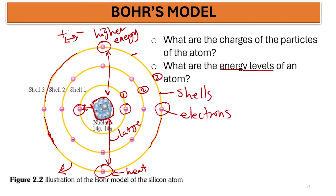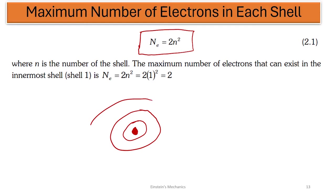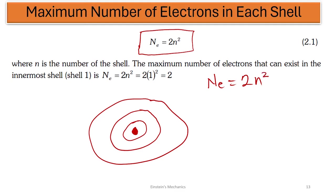Now let's look at the maximum number of electrons in each shell. This is a formula that relates to the number of electrons each shell can accommodate, where n is the number of the shell. The formula is 2n². For the first shell: 2 multiplied by 1 squared equals 2. So the first shell is only capable of taking 2 electrons, nothing more, nothing less. For the second shell: 2 multiplied by 2 squared is 2 × 4, which equals 8. So the second shell can only take 8 electrons.